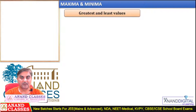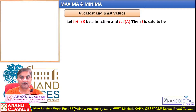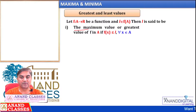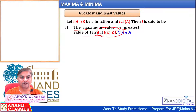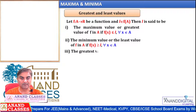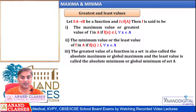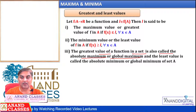Today we start greatest and least value. Let f be a function and l belongs to f of A, where A is the set of values. Then l is the maximum or greatest value of f in A if fx ≤ l. Similarly, l is the minimum or least value if fx ≥ l. The greatest value is called the absolute maximum or global maximum, and the least value is called the absolute minimum or global minimum of set A.